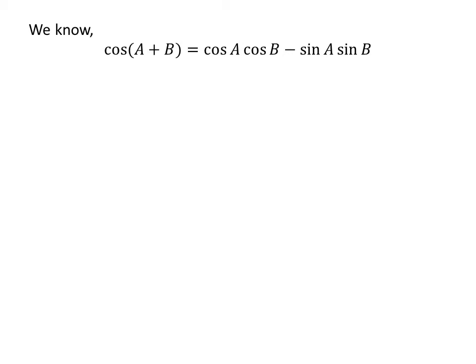As we know, the trigonometry identity cosine of a plus b is equal to cosine of a times cosine of b minus sine of a times sine of b.